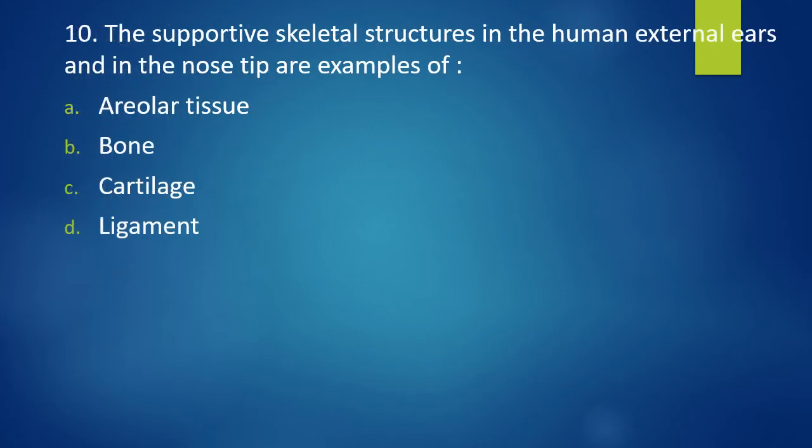Question 10. The supportive skeletal structure in human external ear and the nose tip are example of areolar tissue, bone, cartilage, or ligament. Correct answer is option C. Cartilage.